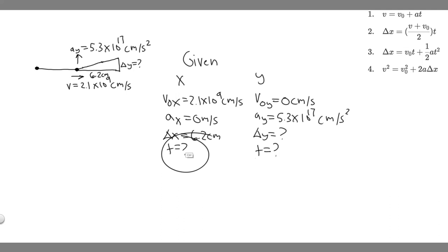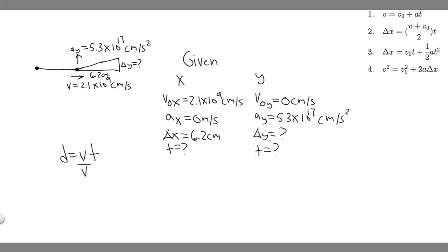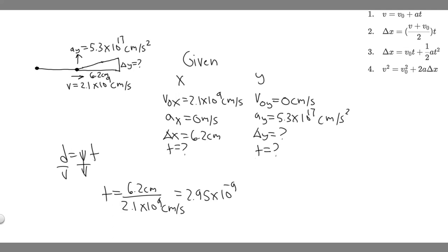For Part A, we know distance equals velocity times time, so time equals distance divided by velocity. The distance is 6.2 centimeters and the velocity is 2.1 times 10 to the 9 centimeters per second. So we do 6.2 divided by 2.1 times 10 to the 9, which gives us 2.95 times 10 to the minus 9 seconds. The centimeters cancel and we're left with seconds. This is how long it takes to travel 6.2 centimeters horizontally — that's the answer to Part A.